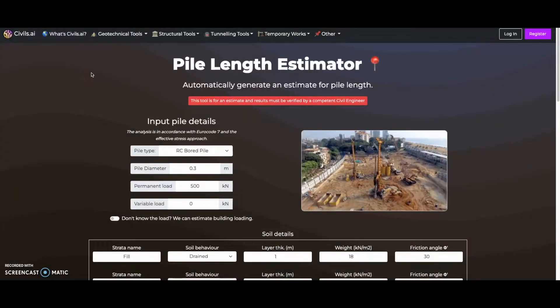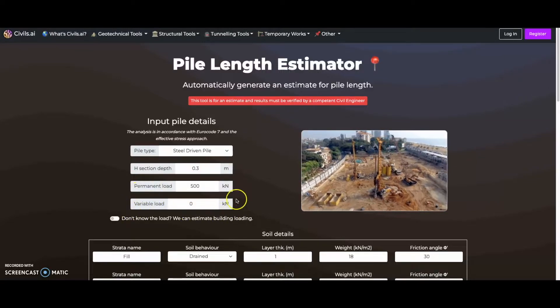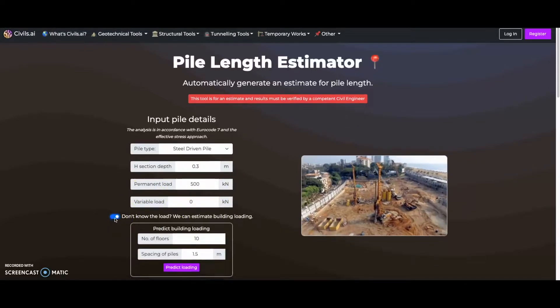Civils.ai can analyze piles for us. Here, we can input our pile type as either bored or driven. We can enter the geometry as the diameter or depth of the pile section. Next up, you can enter both a permanent or a variable load. Or you can let us estimate a building load for you, using number of floors and pile spacing.